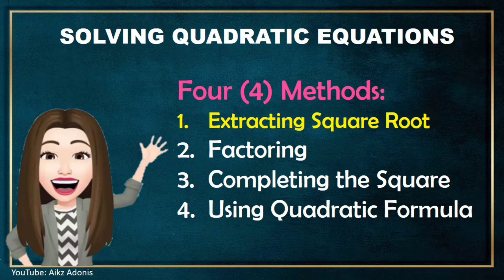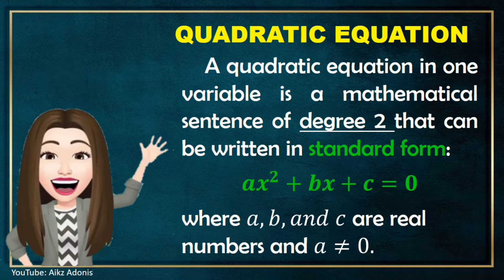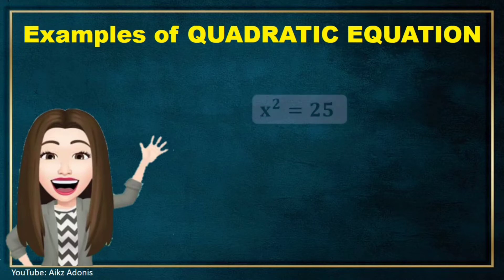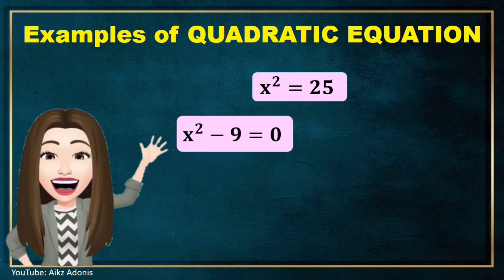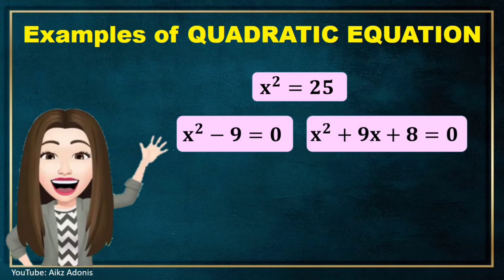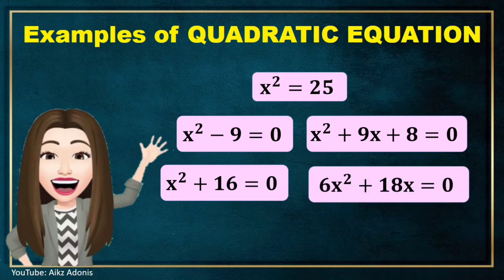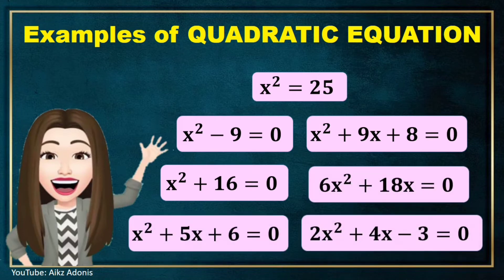Let's recall first what is a quadratic equation. A quadratic equation in one variable is a mathematical sentence of degree 2, meaning the highest exponent of the equation is 2. This can be written in standard form, where a, b, and c are real numbers and a is not equal to 0. Examples of quadratic equations are: x² = 25, x² − 9 = 0, x² + 9x + 8 = 0, x² + 16 = 0, 6x² + 18x = 0, and many more.